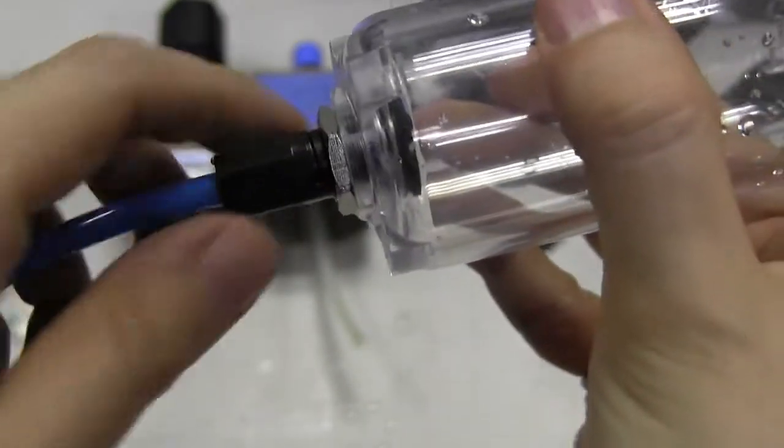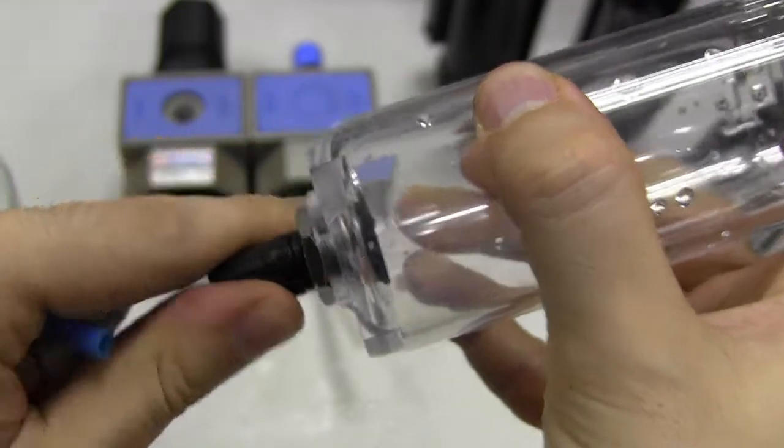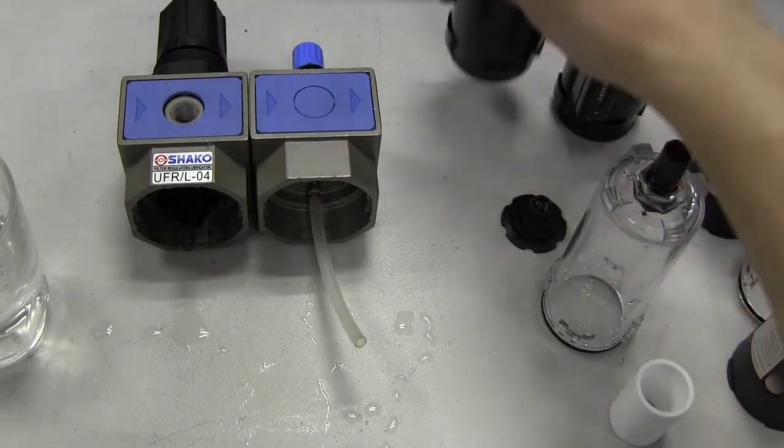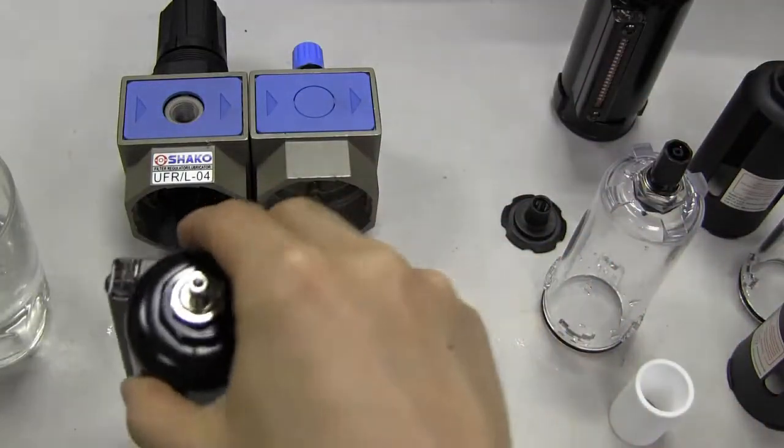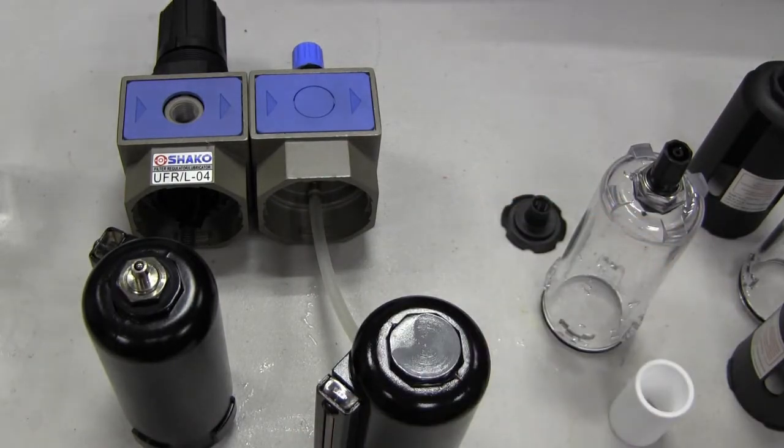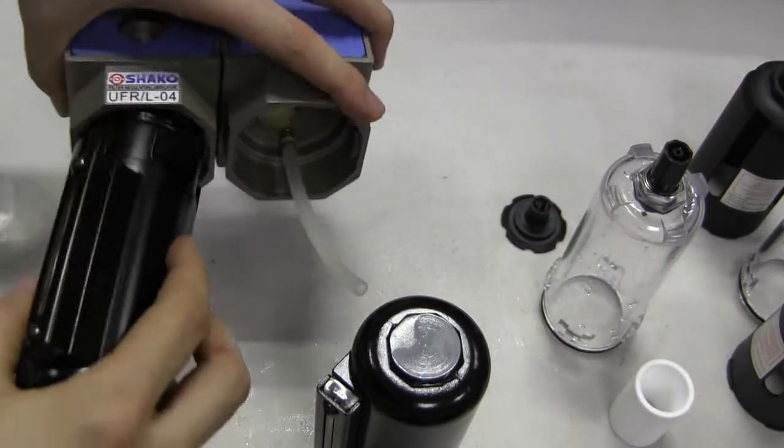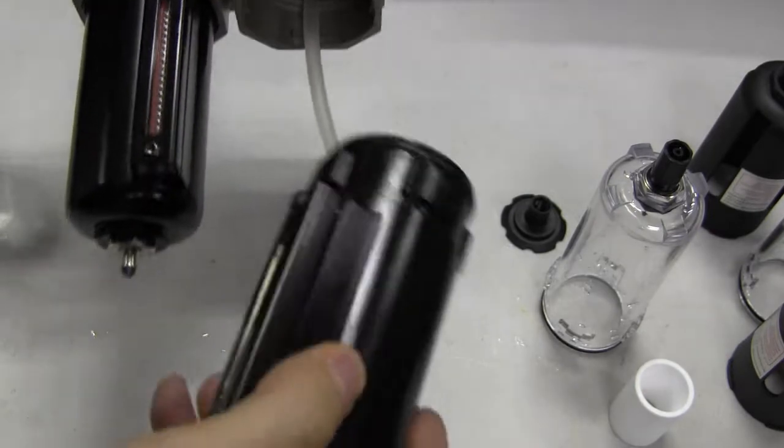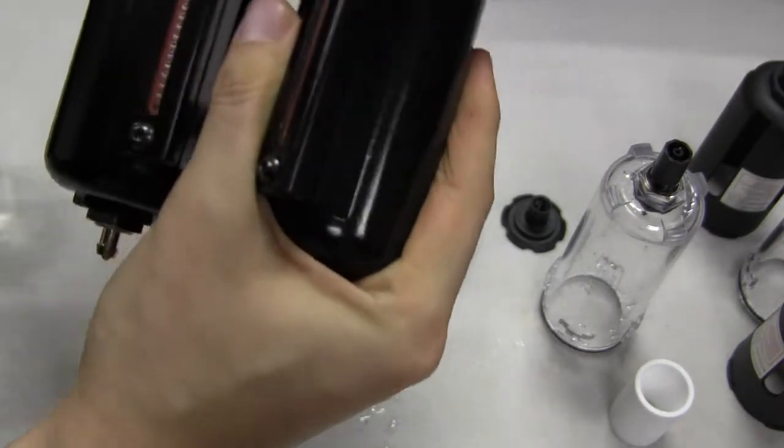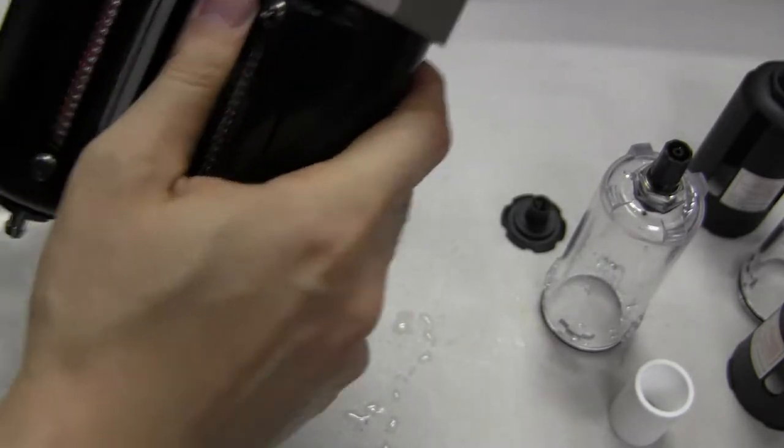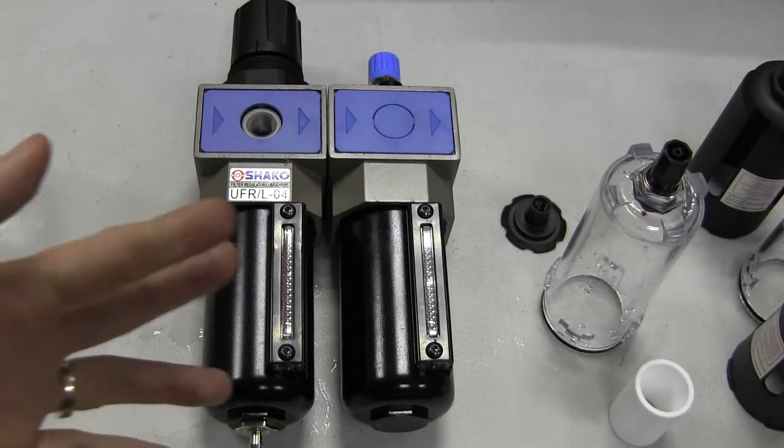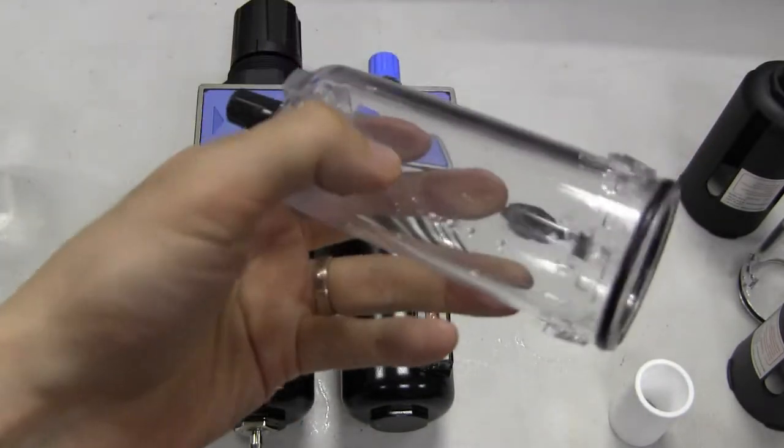For Shako, they have a heavy-duty aluminum bowl which you can install very easily. What it does is it's very ideal for rough conditions. For example, if you're in a construction site and somebody hits the bowl...